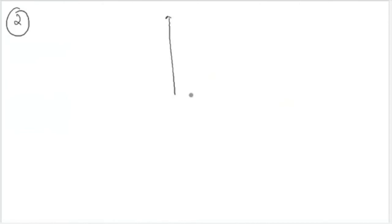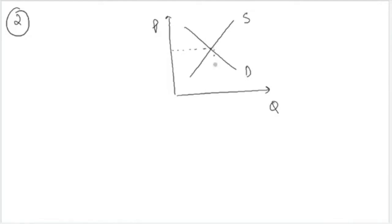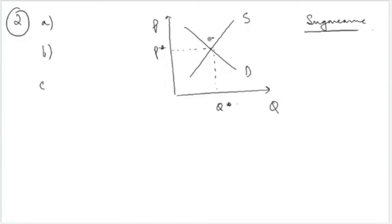Now let's take another example — the case of a shift in the supply curve. Suppose that during summer, a hurricane has destroyed part of the sugarcane crop, resulting in a change in supply. You again have an initial demand and supply curve with an initial equilibrium point. The first step is to identify whether this event affects demand or supply — and clearly it will affect the supply.